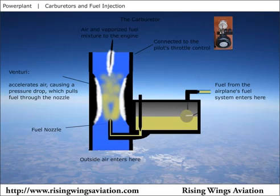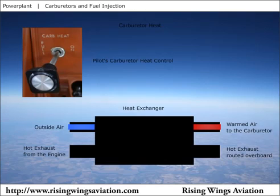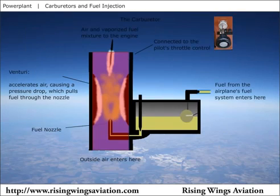A pilot can counteract the formation of carburetor ice through the use of carburetor heat. The carburetor heat control in the cockpit moves a valve which directs intake air through a small heat exchanger. The heat exchanger uses hot engine exhaust to warm the intake air. The use of carburetor heat will also cause an engine performance decrease, due to the air being thinned as a result of being heated.